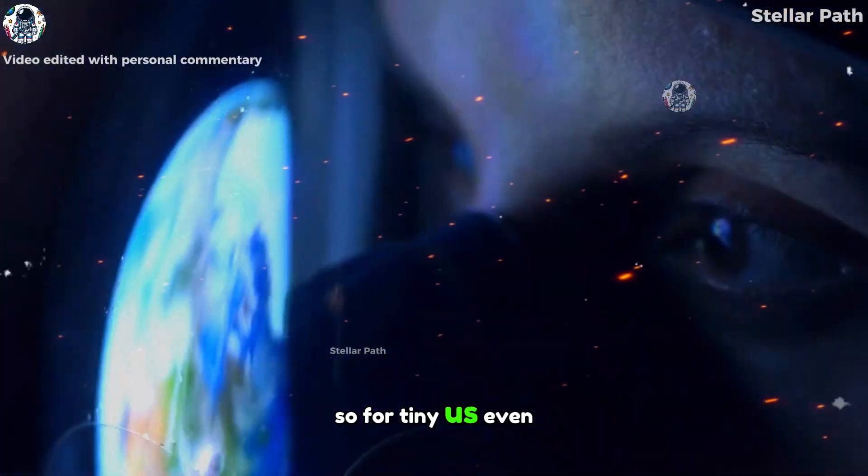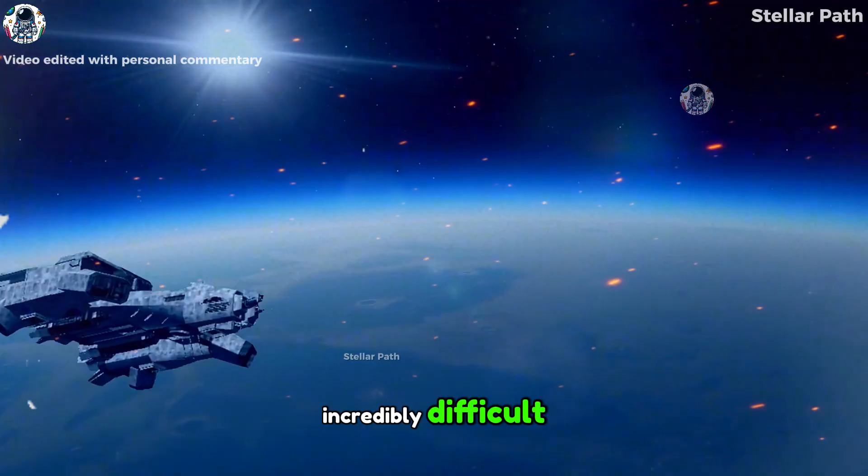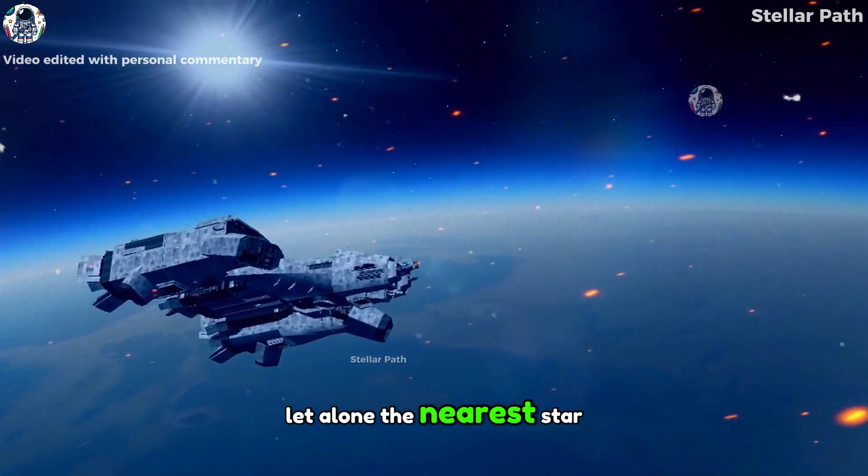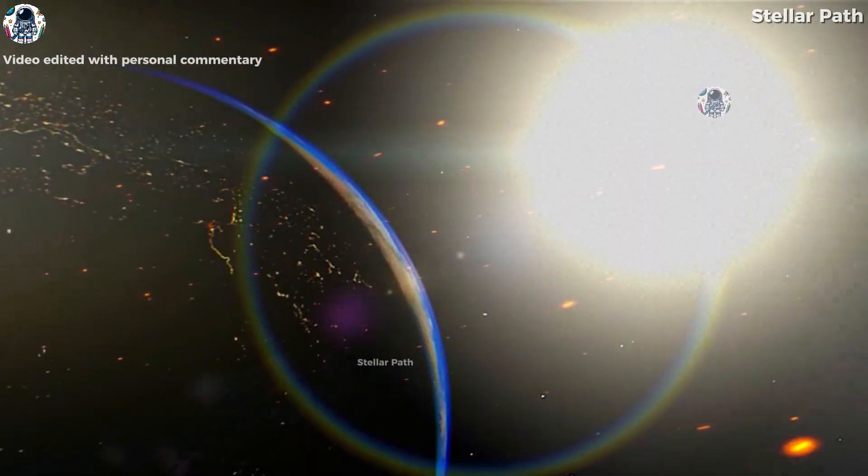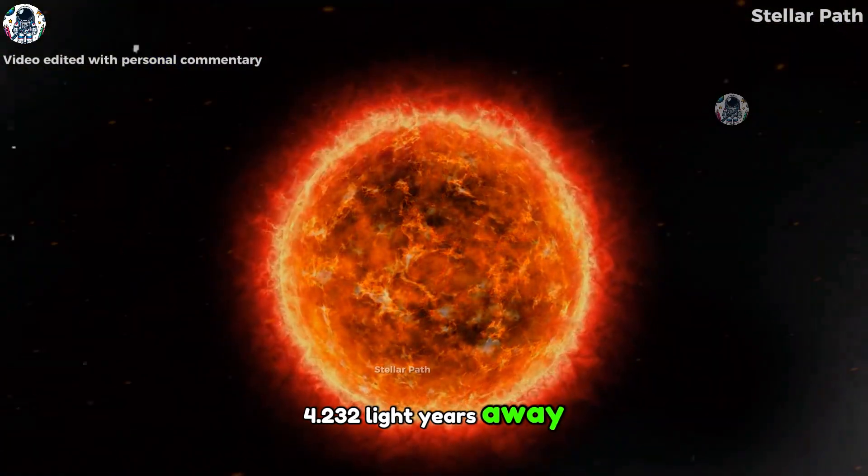So for us, even crossing one light year feels incredibly difficult, let alone the nearest star to the Sun, Proxima Centauri, which is still 4.22 light years away.